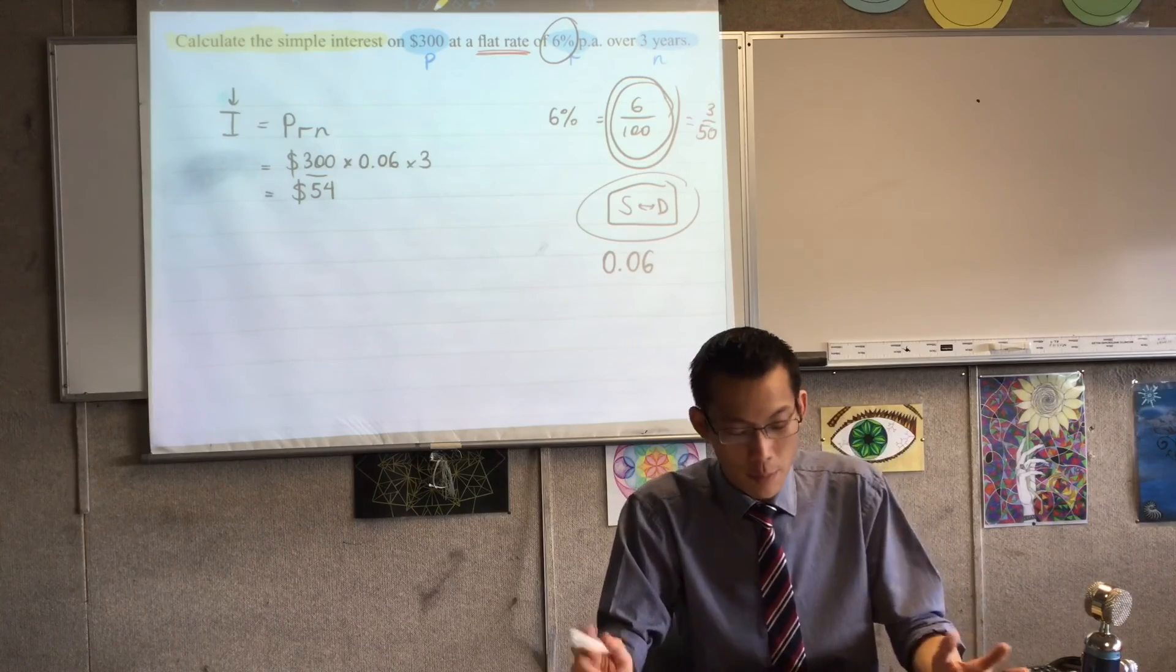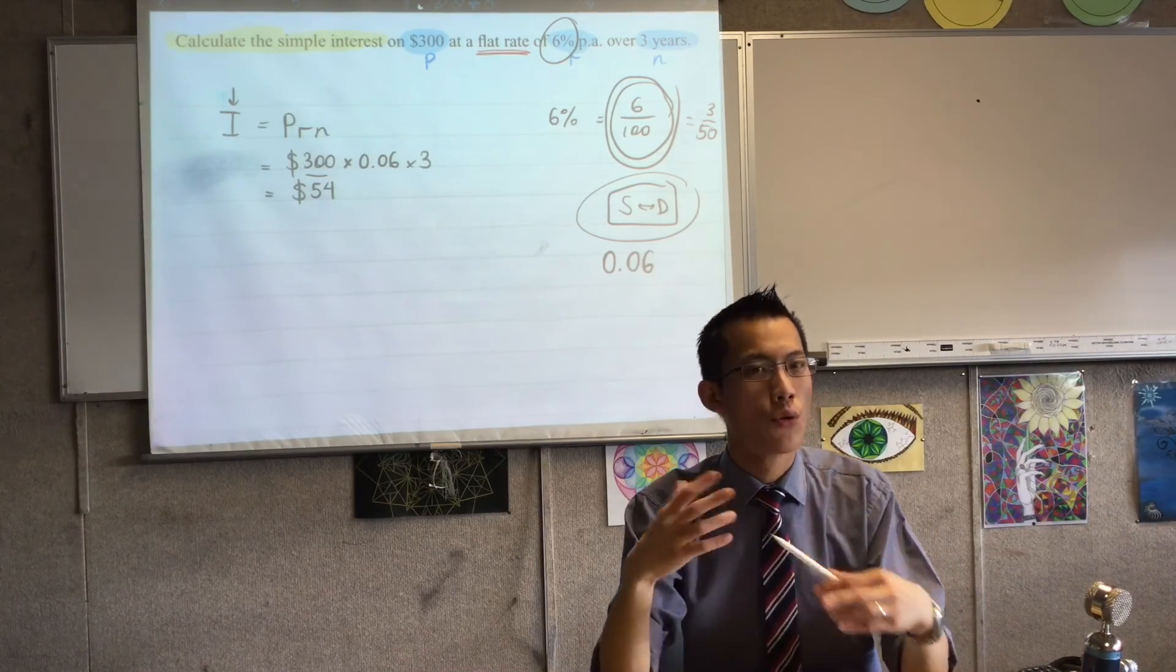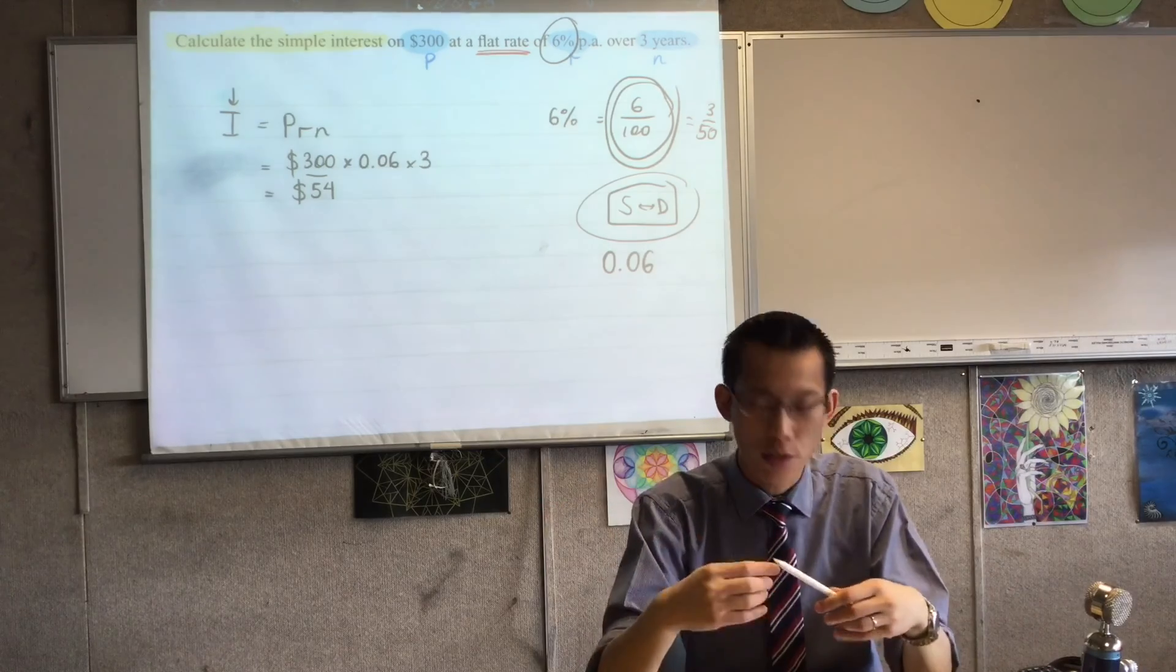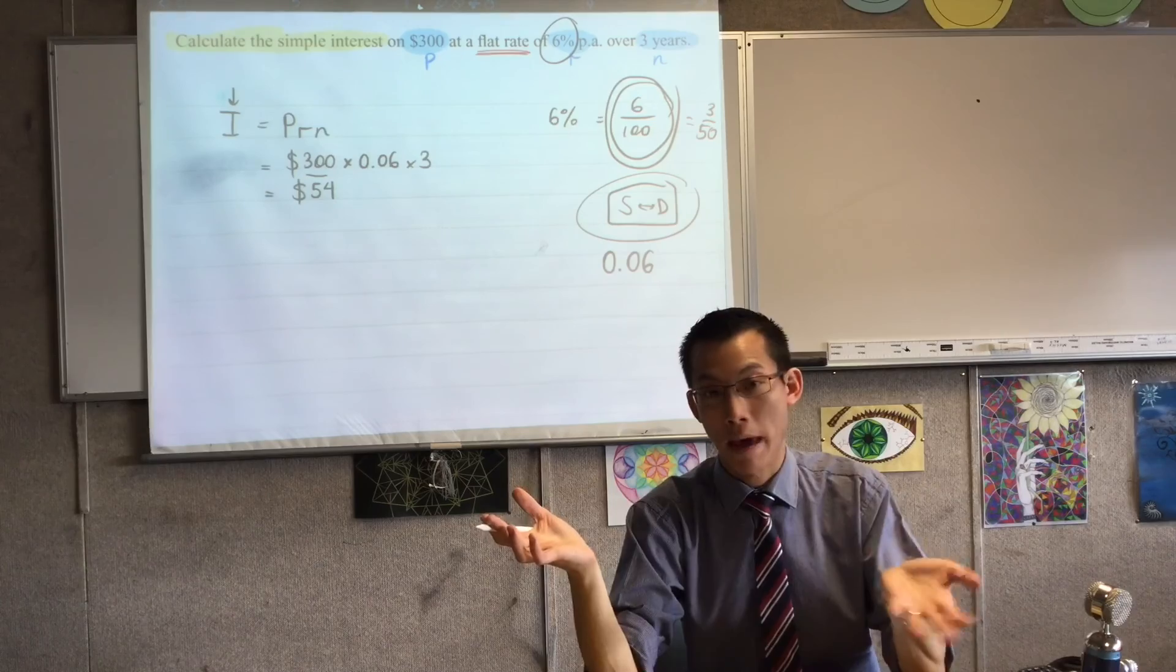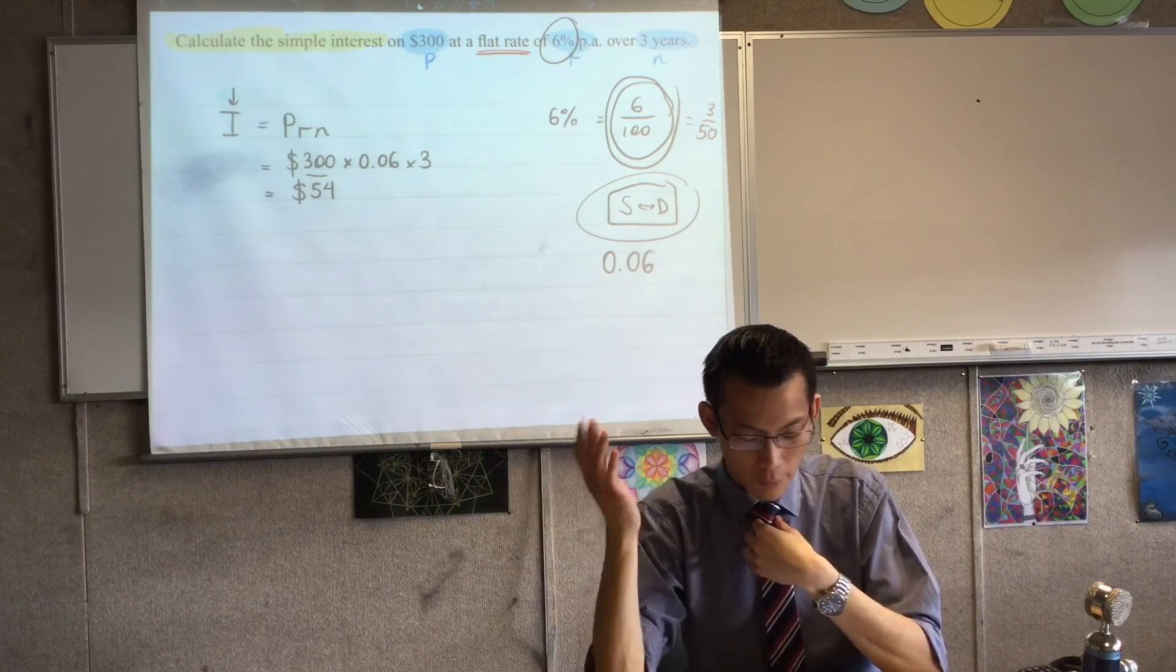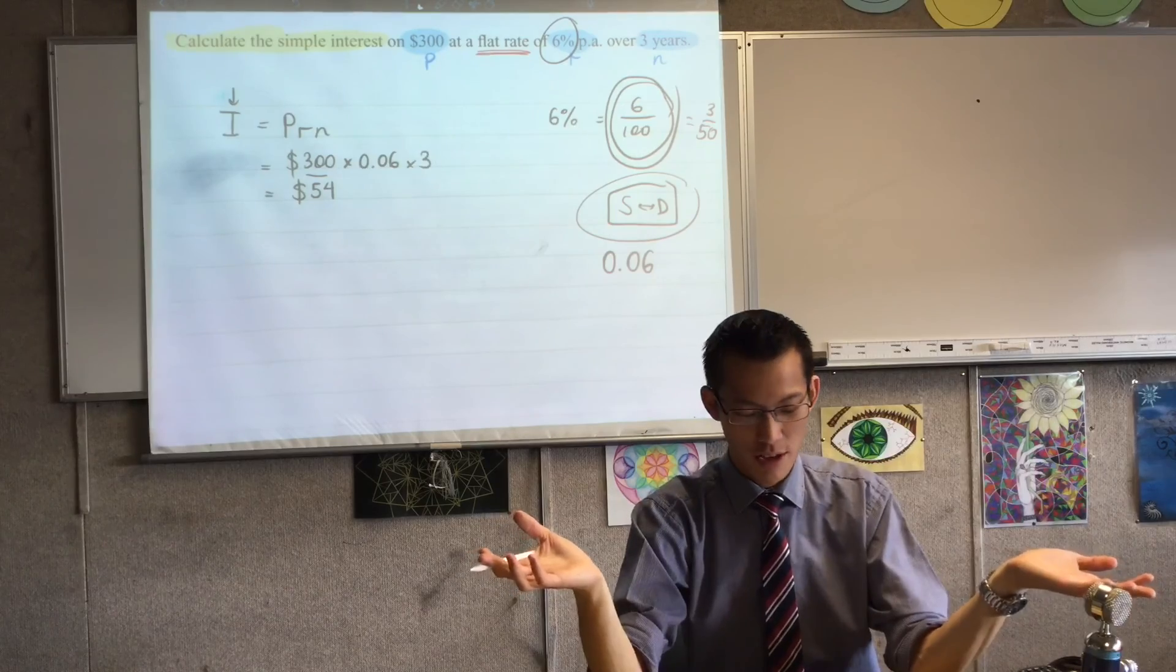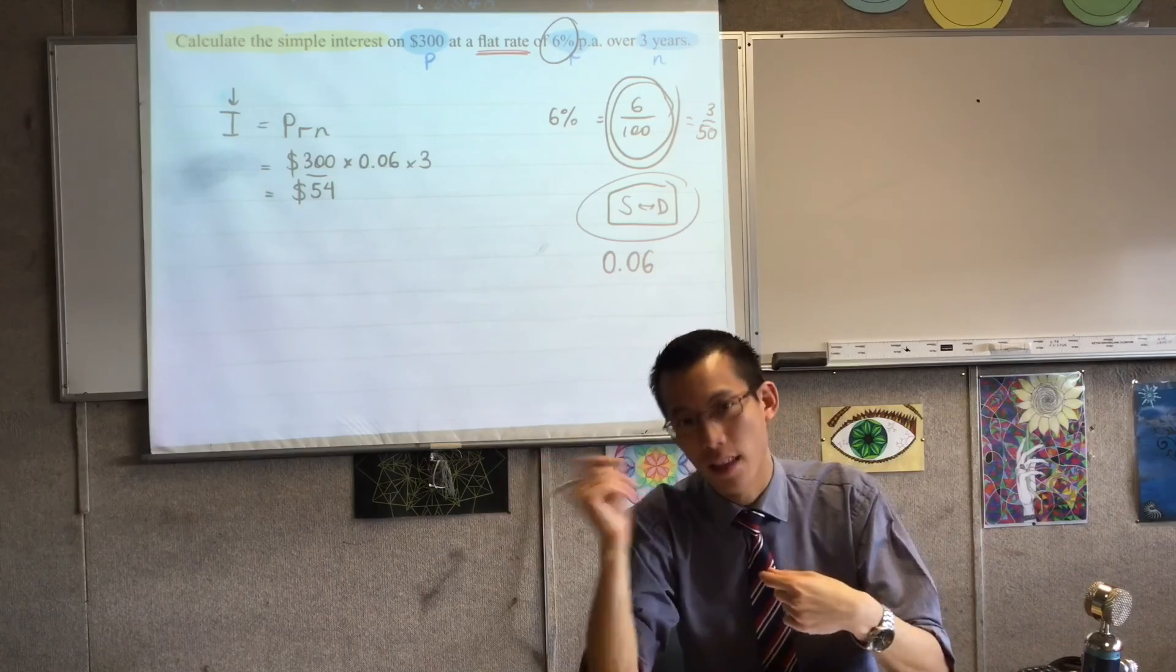So again, when you're highlighting things, you want to be really careful as to what they're actually asking you. It would be just as easy to reframe this question to say, maybe what would be the total value of what you have after three years. And that would be not just the $54 that maybe the bank has paid you since you've been giving them your money to loan. It'll be the $54 plus the $300 you started with.